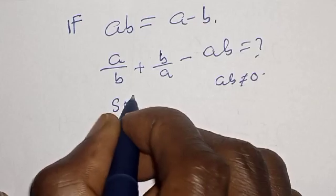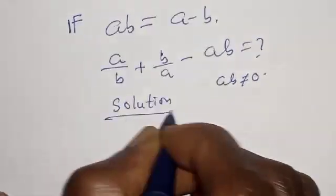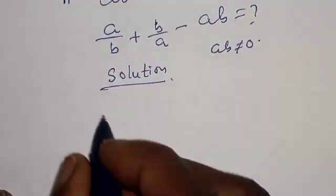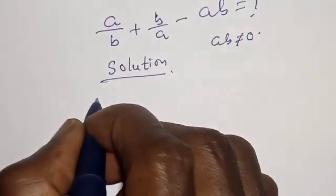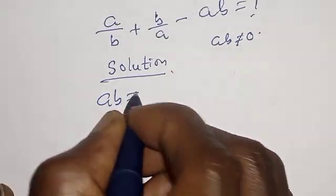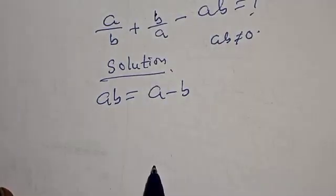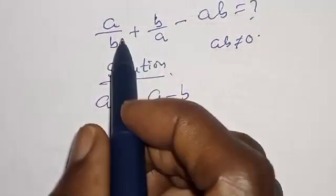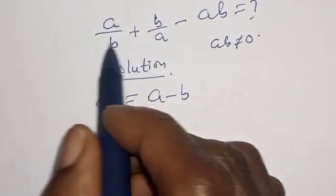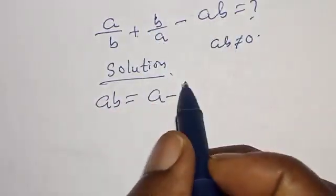Solution. We have the given equation: AB is equal to A minus B. We are looking for the value of A divided by B plus B divided by A minus AB.